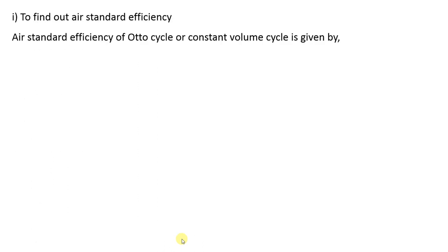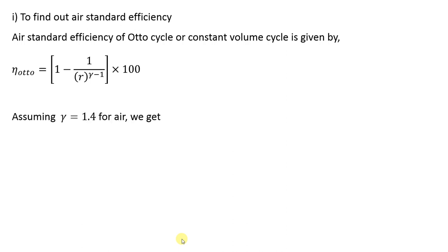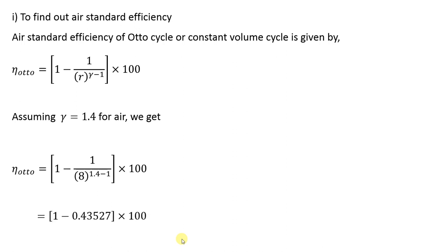Using the compression ratio, we can find the air standard efficiency of the Otto cycle, which we derived in previous videos. The efficiency depends on compression ratio and gamma. Gamma is 1.4 for air. Substituting: efficiency = 1 − (1/8^(1.4−1)) × 100 = 56.472%.